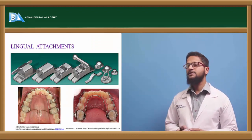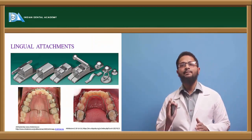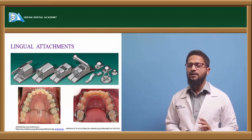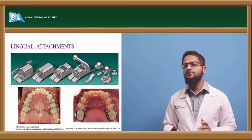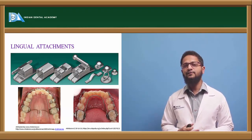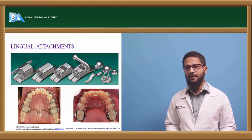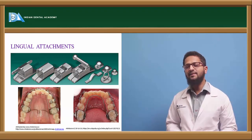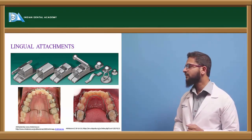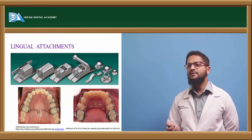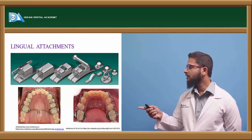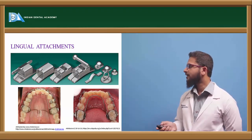Lingual attachments are placed on the lingual or palatal aspect of the teeth, as opposed to buccal tubes which are on the buccal aspect. There are many cases requiring lingual attachments, such as correction of crossbites. Lingual attachments are available as lingual cleats or lingual buttons and can be directly bonded onto the tooth surface. They are also required for the placement of a lingual arch.